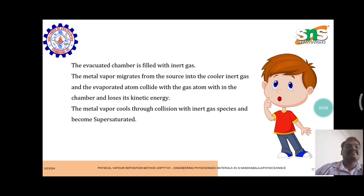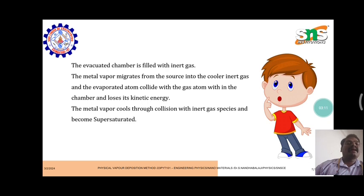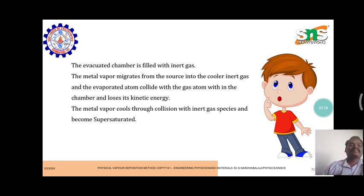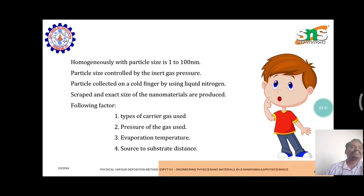The metal vapor migrates from the source into the chamber in inert gas. The evaporated atoms collide with the gas atoms within the chamber and lose their kinetic energy. The metal vapor cools through collision with inert gas species and becomes supersaturated.